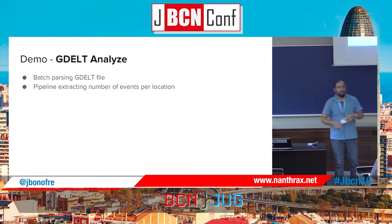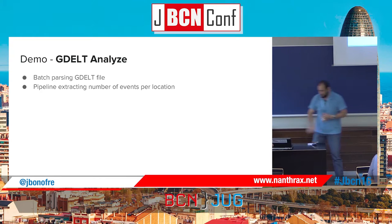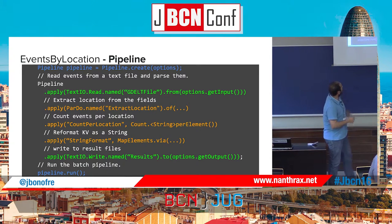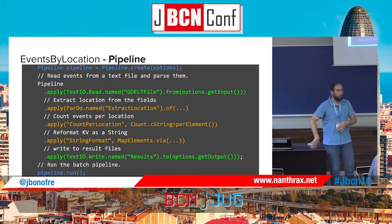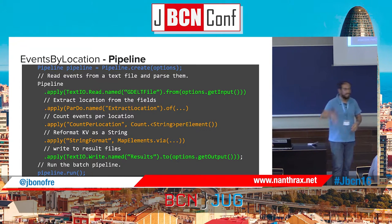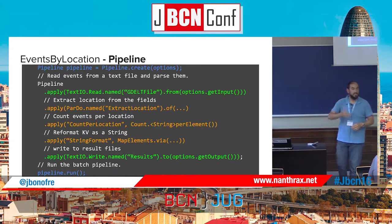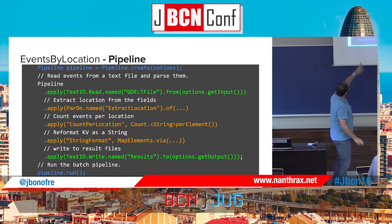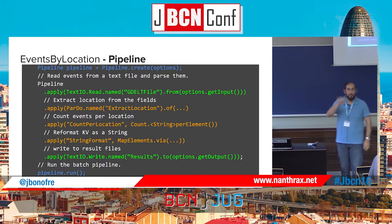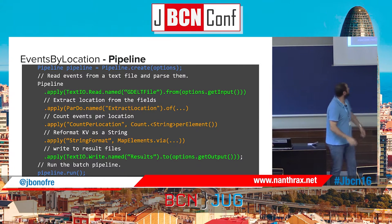Basically the pipeline I'm going to build starts from a TextIO because I read a CSV file. The CSV file can be on my local machine, but it could also be on HDFS, S3, or the web. I apply a first transformation to extract the location. For each line in the CSV you have the timestamp, kind of event, name, country, city, and all this stuff — I just extract the country. Then I count the number of events per country, doing a map and then a reduce.